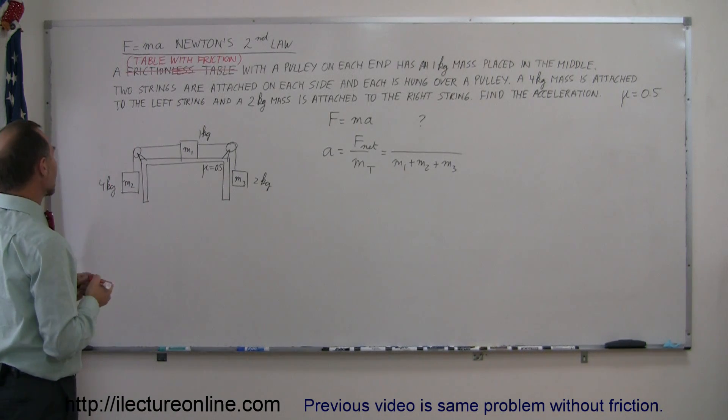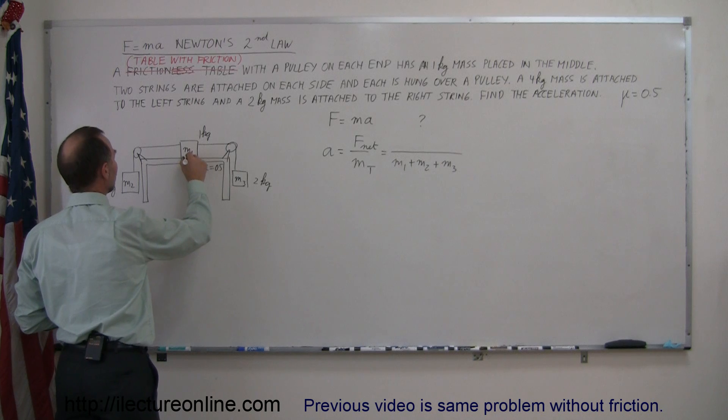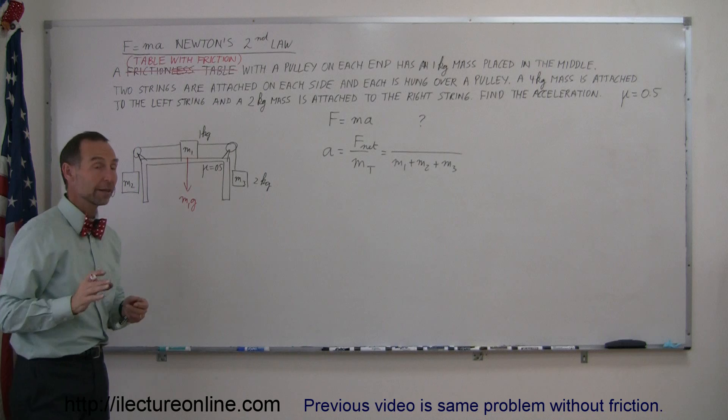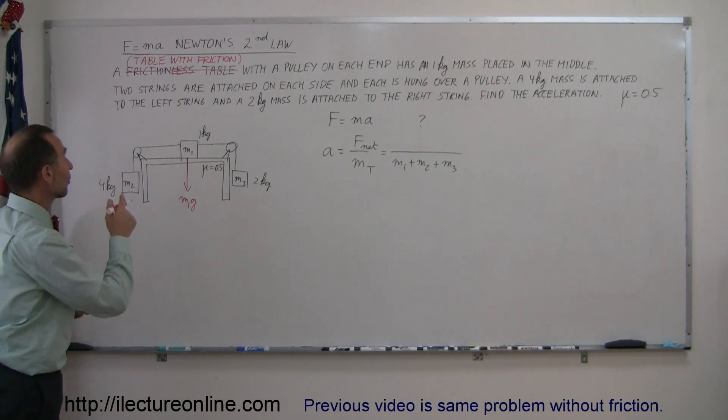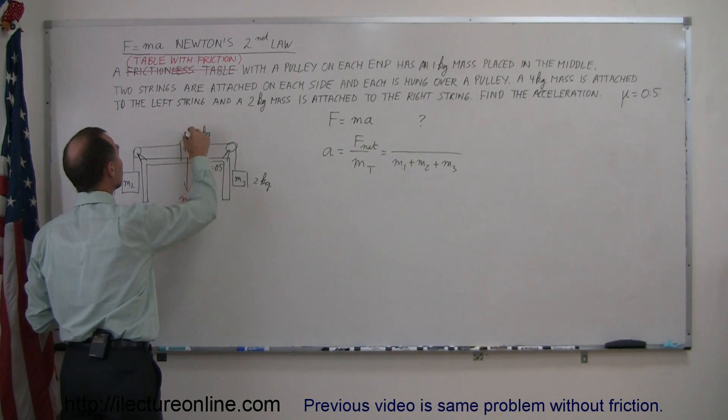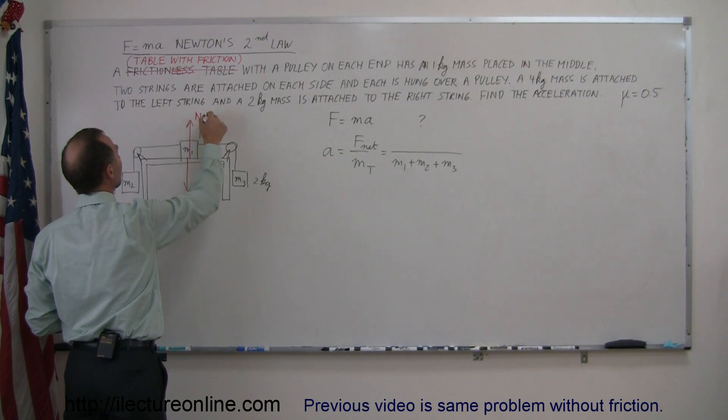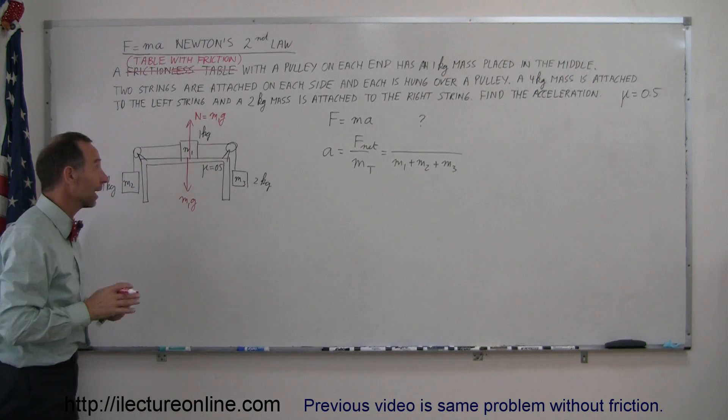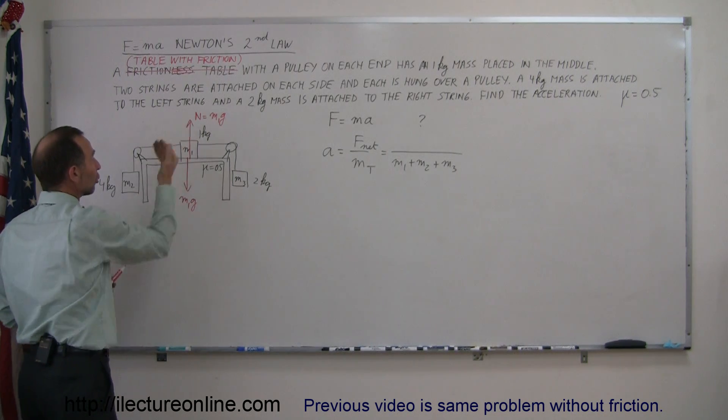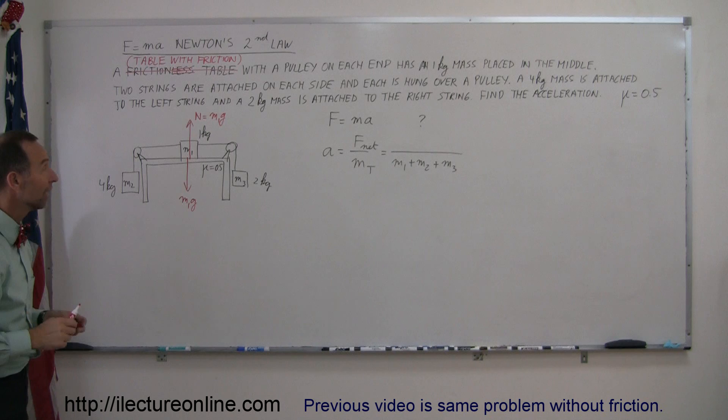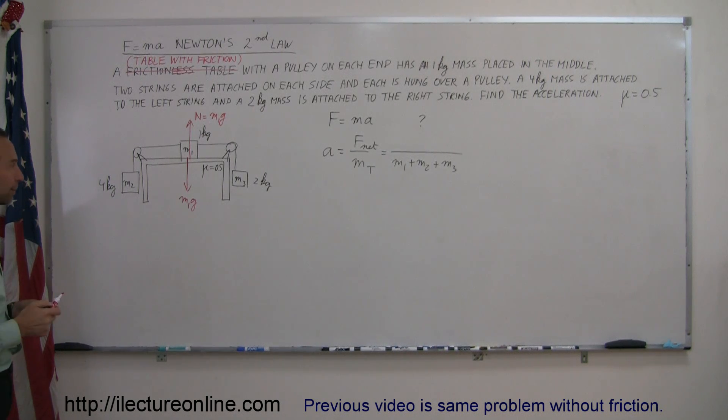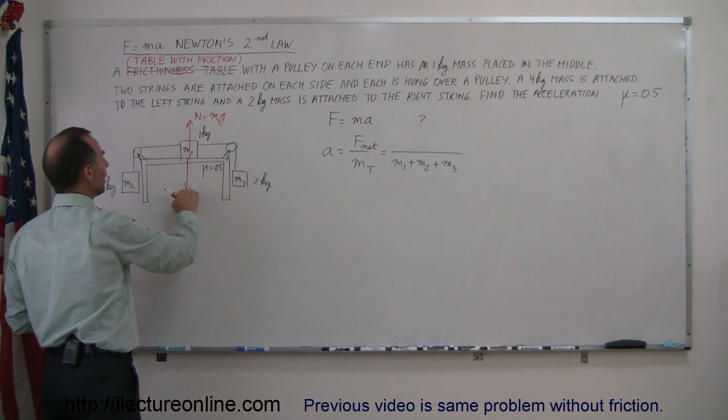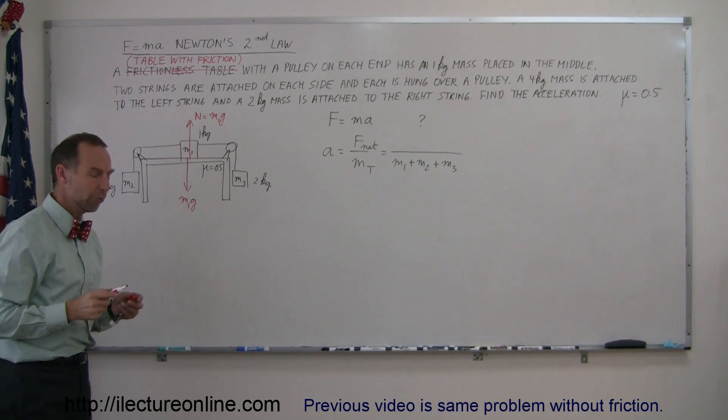Drawing all the forces acting on the system, for M1 there's a force of gravity pulling down, M1g. Newton's third law dictates there's an equal and opposite force, the table pushing back. The normal force equals M1g in magnitude, not in direction. M1g is in the negative direction, the normal force in the positive direction, but they're equal in magnitude and cancel each other out.